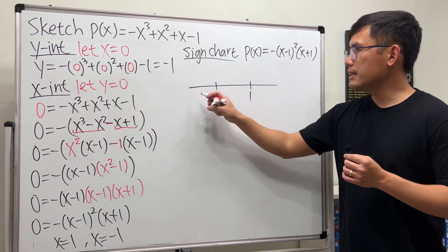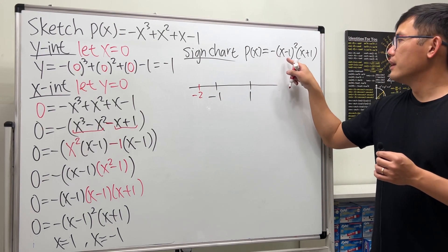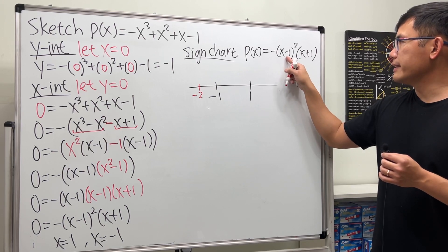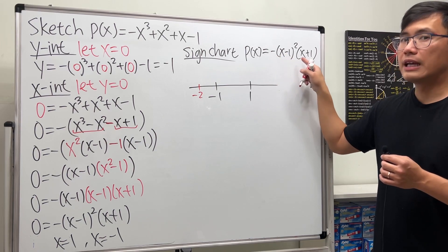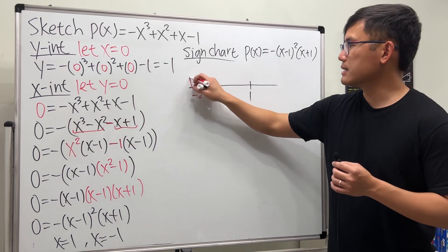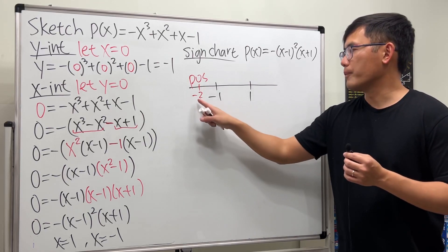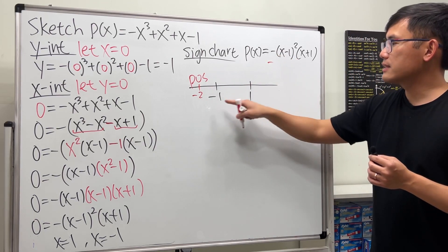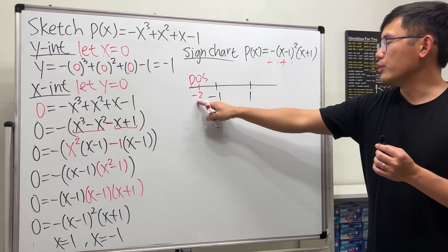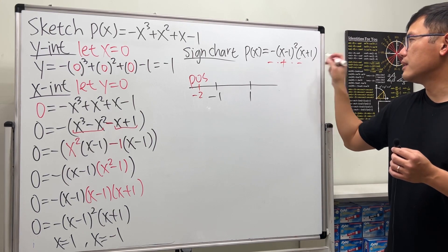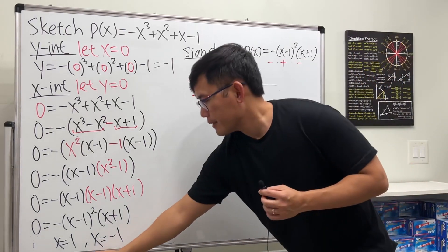Pick a number less than -1, let's say -2. Plugging in: the leading negative stays, (-2 - 1) = -3, squared is positive; (-2 + 1) = -1, which is negative. So we have negative × positive × negative, which altogether is positive. The sign in the leftmost region is positive.